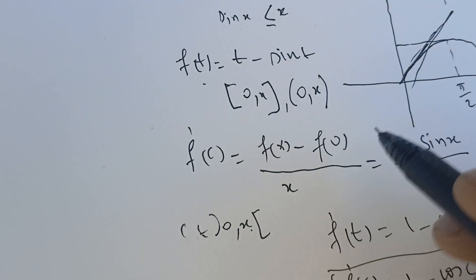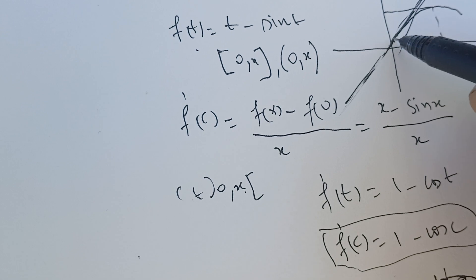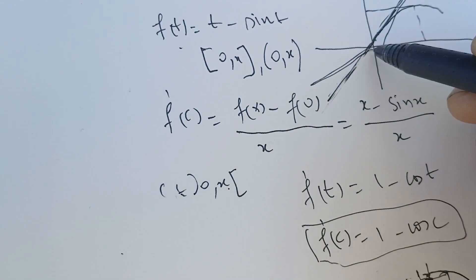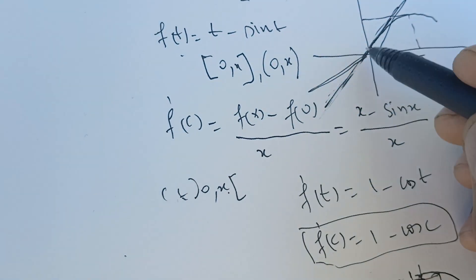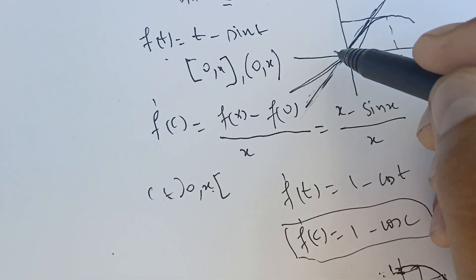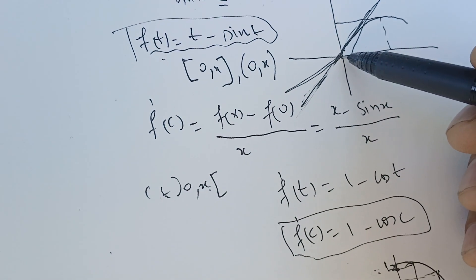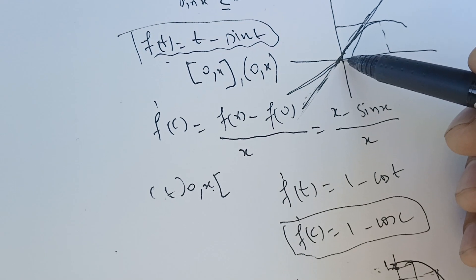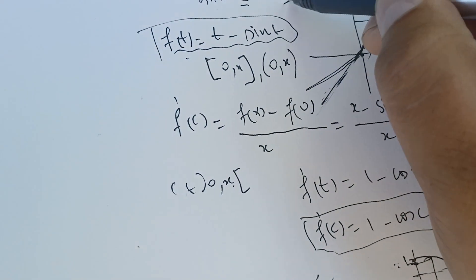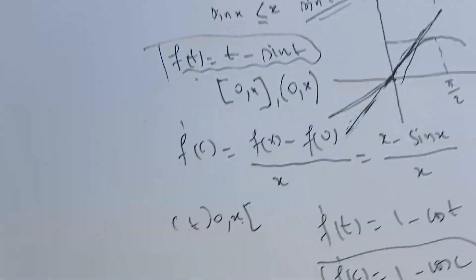We've proved the result when x is positive. When x is negative, you can extend it using the fact that the function is odd: f(minus t) = minus t plus sine(t), so you flip the minus sign. You can use the fact that our function is odd, or observe that sine(minus t) = minus sine(t) because sine is an odd function. This proves the result for negative x as well.